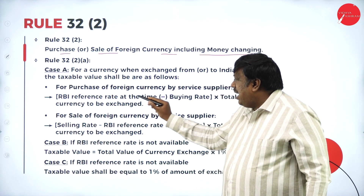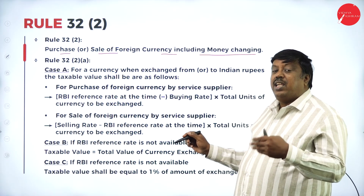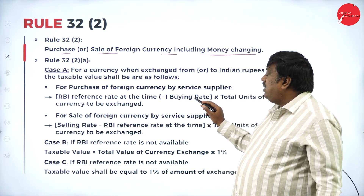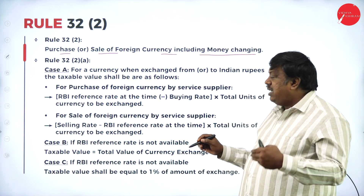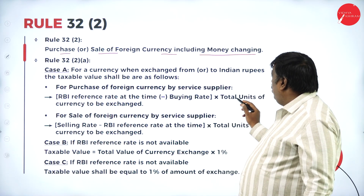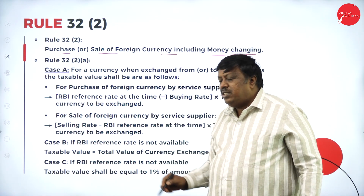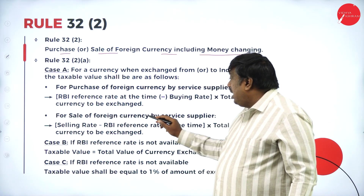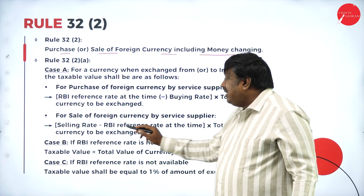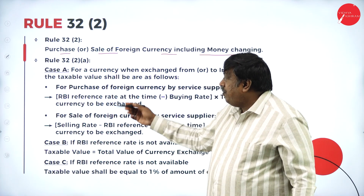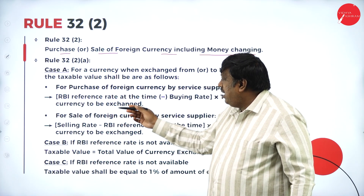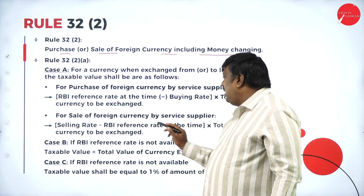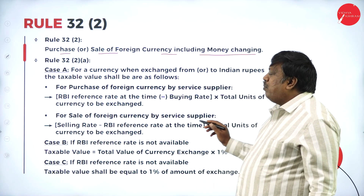When exchanging or purchasing, the RBA reference rate is used. We subtract the buying rate and multiply by the total number of units of currency exchanged. For sale of foreign currency by the service supplier, it is different: selling rate minus RBA reference rate, multiplied by the total number of units.